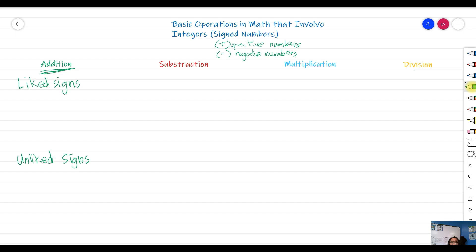In general terms, if you have positive a plus positive b, that gives you positive of the sum of a and b. Another case is if you have negative a plus negative b, it is simply the negative of the sum of a and b. That is the general rule for adding like signs or like integers.